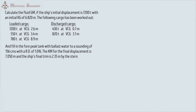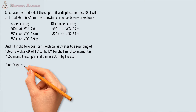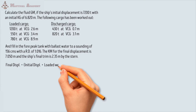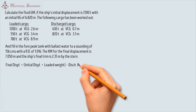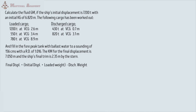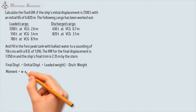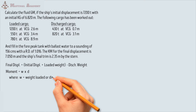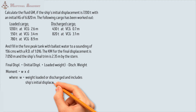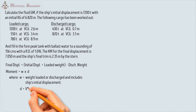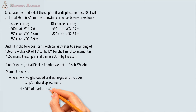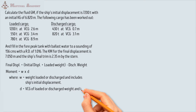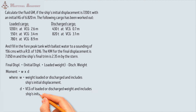The first step is to find the final displacement and final vertical moment. To determine the final displacement, we will add all the weight being loaded from the initial displacement and subtract all the weight being discharged. To find the moment, the formula is weight times distance. For the weight, it is the weight being loaded or discharged, and that includes the ship's initial displacement. For the distance, it is the VCG or vertical center of gravity of the weight being loaded or discharged, and it includes the ship's initial KG.